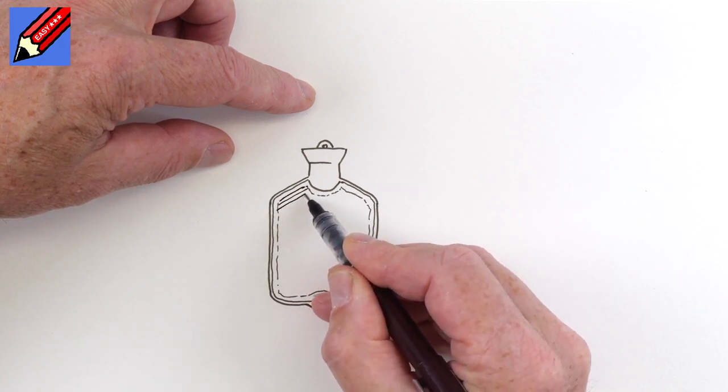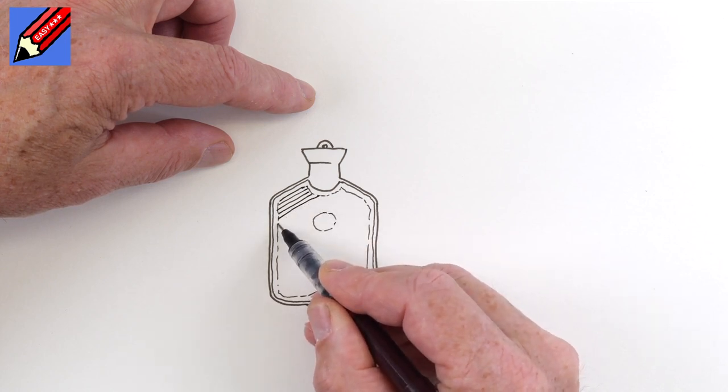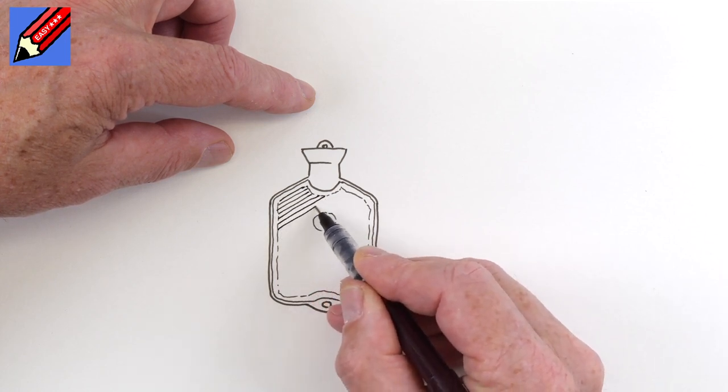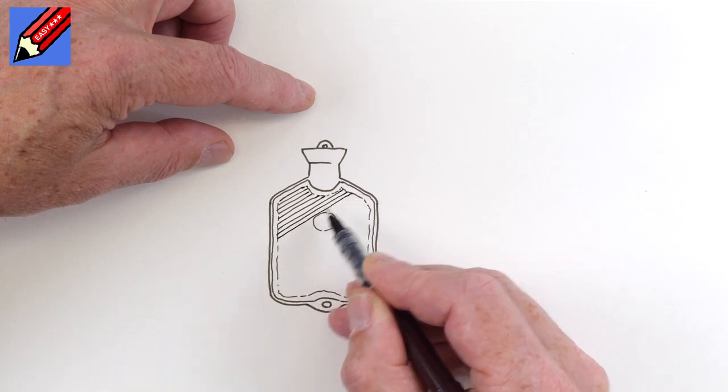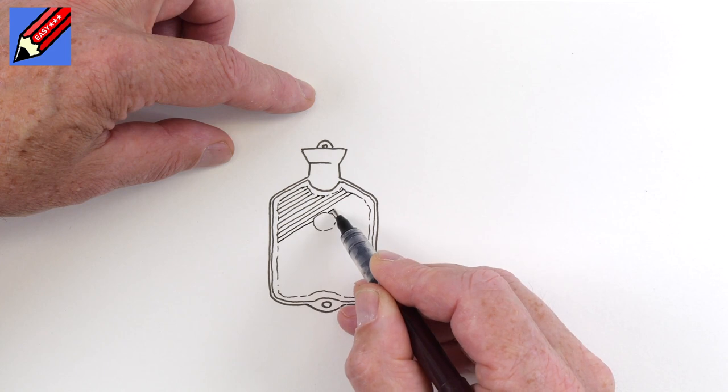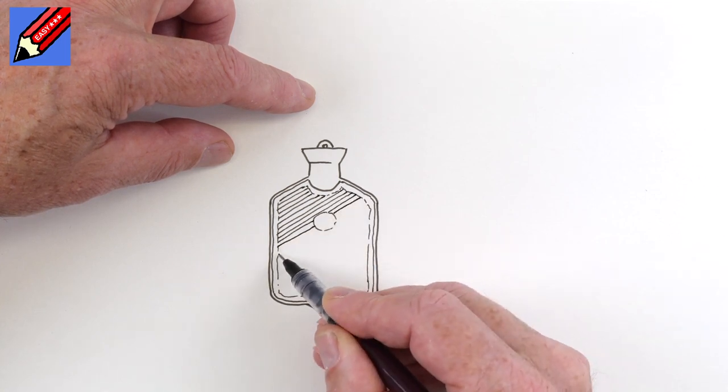We'll start drawing lines really carefully. All nicely parallel, going in the same direction. From one side to the other. And when we come to the circle in the middle, then we stop and carry on on the other side.